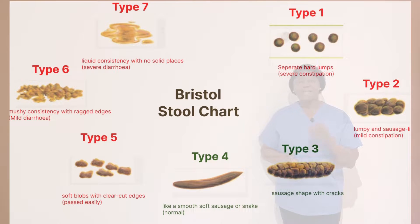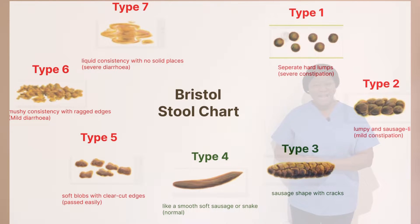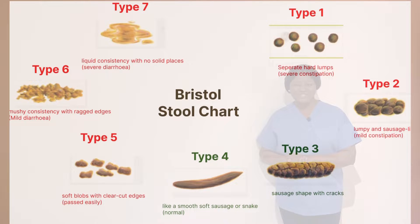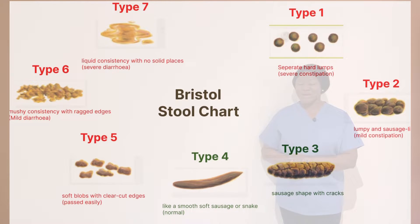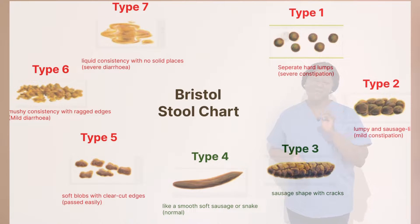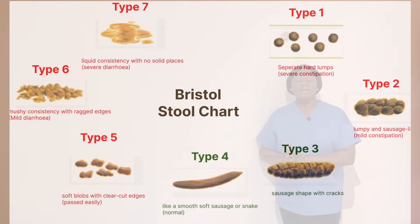Type four is smooth and is considered normal. Type five is a soft blob with clear-cut edges — it's near normal. Type six is a mushy, consistent stool and is considered mild diarrhea. And type seven is liquid and consistent, and it's considered severe diarrhea.